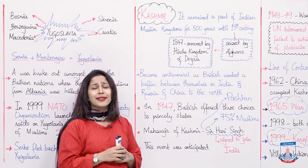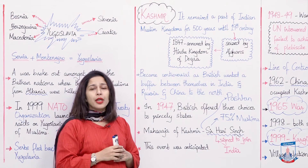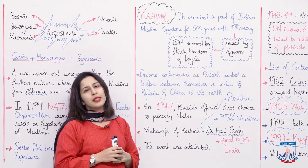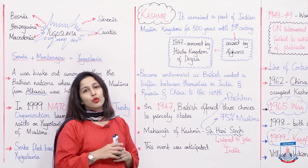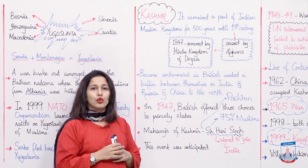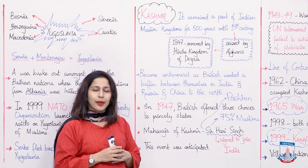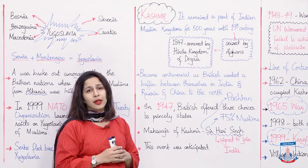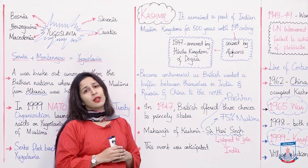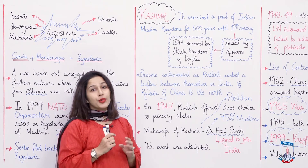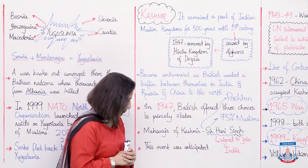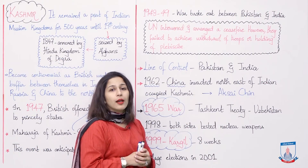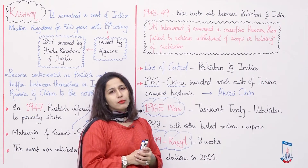If Kashmir were part of India, India would be better able to control the water flow from these rivers to Pakistan. India can control the water flow — so what Pakistan gets from those rivers would be controlled by India. This was their planning. These are the hidden reasons behind it. 1947 passed and partition happened.